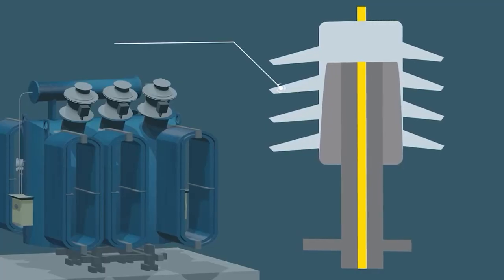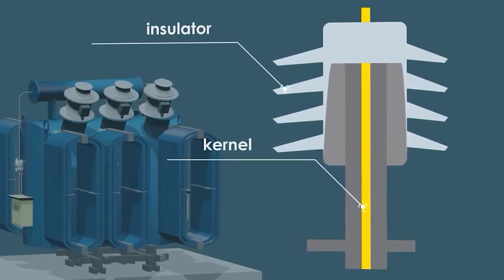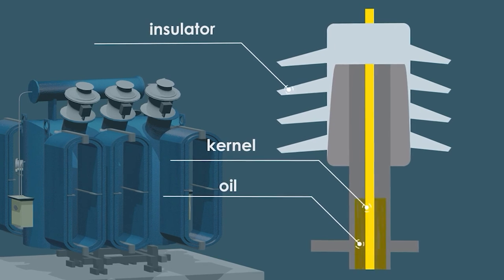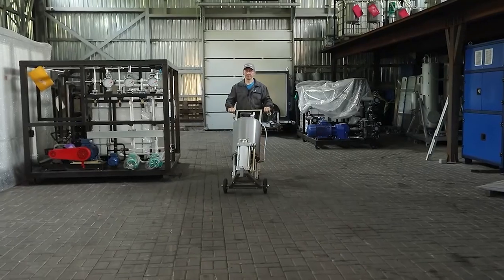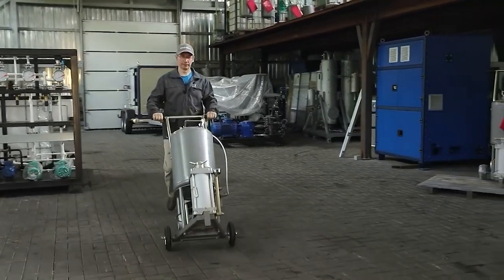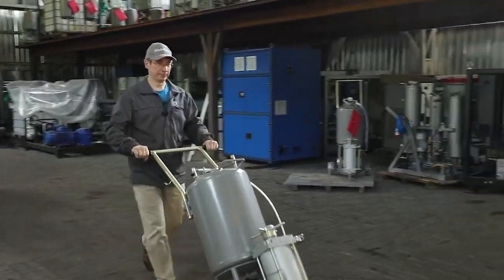Oil in transformers is contained not only in the tank, it is also used in high voltage bushings and switches, but in much smaller amounts. To restore the oil level in such devices, GlobeCore has developed a small UVD type unit.